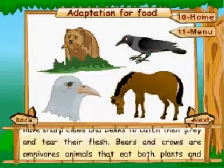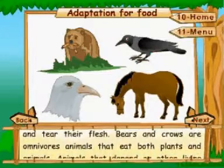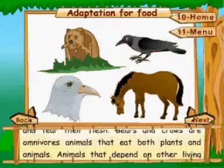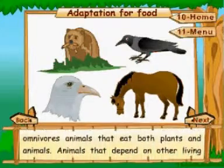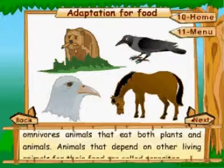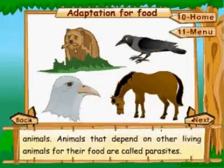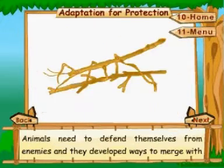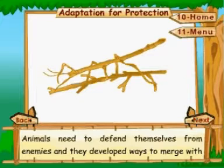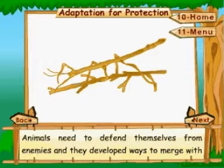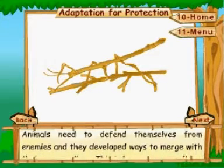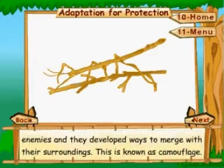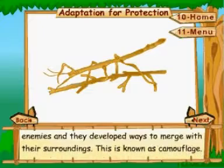Bears and crows are omnivorous animals that eat both plants and animals. Animals that depend on other living animals for their food are called parasites.